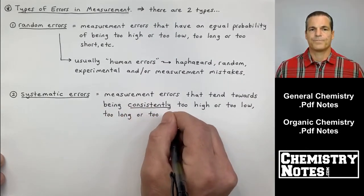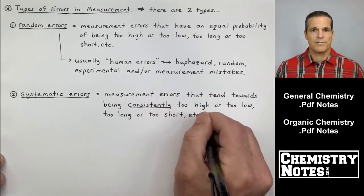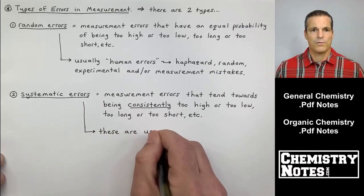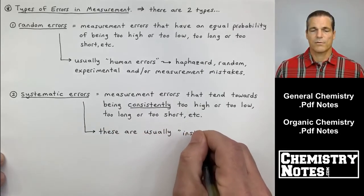Systematic errors, these are measurement errors that tend towards being consistently too high or too low, too long, or too short.